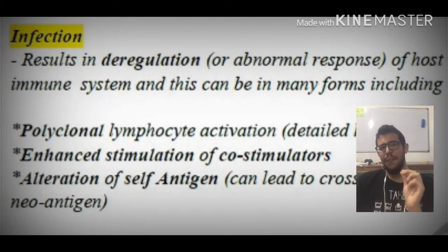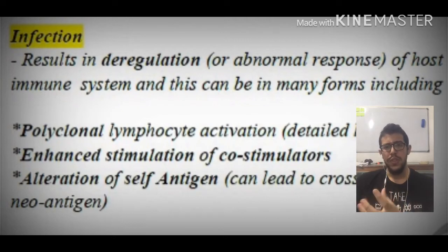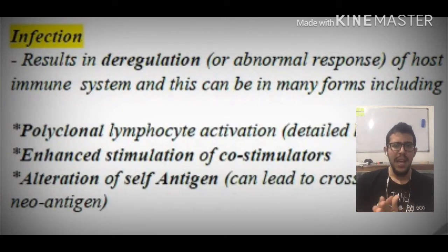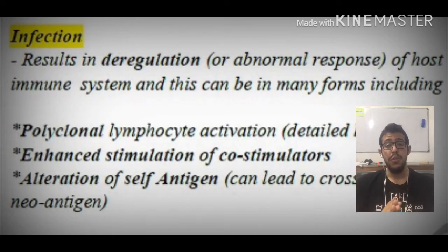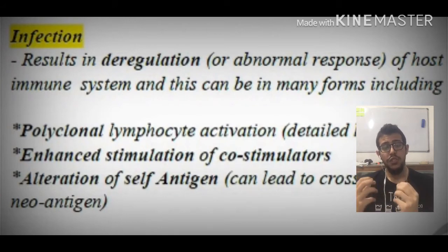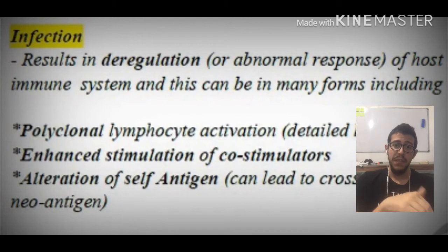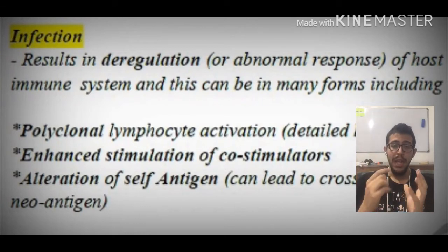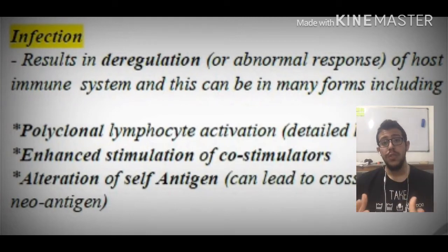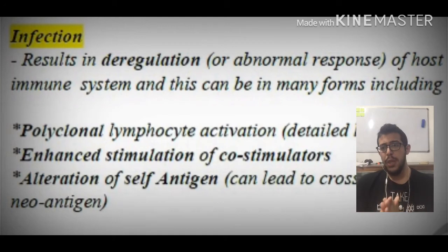Now, infection. Sometimes infections can result in the deregulation of a host immune system, causing an abnormal response to certain inductions, and this can take many forms, including polyclonal lymphocyte activation. For example, a certain bacteria enters our body, and since the body has memory cells, those memory cells induce an immune response against this bacteria. However, if a new bacteria is introduced, and instead of forming only one clone for the same epitopes or antigens, multiple clones are forming, this is going to be very exhausting for the immune system.